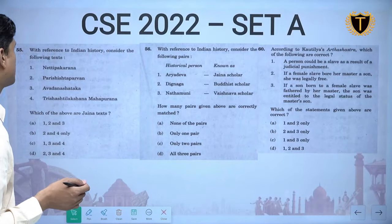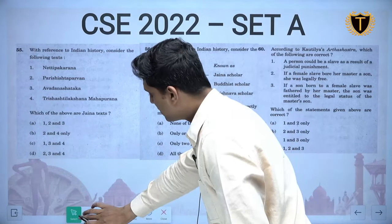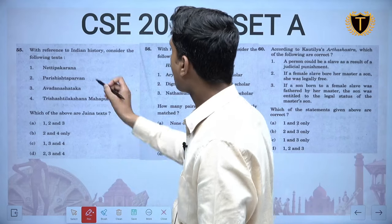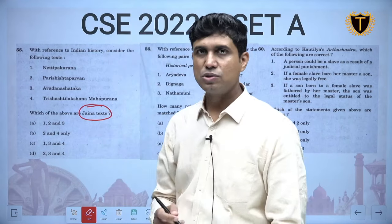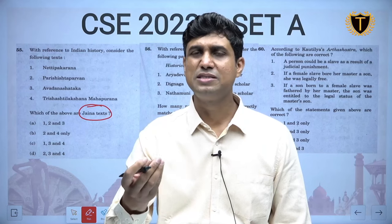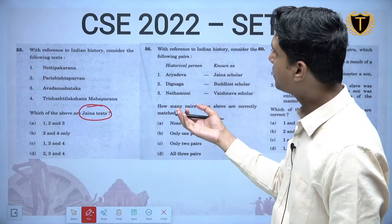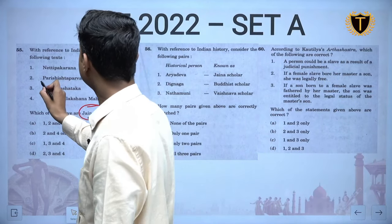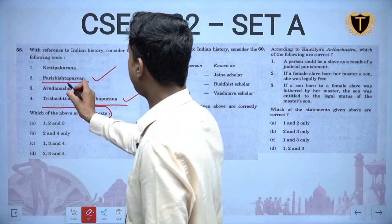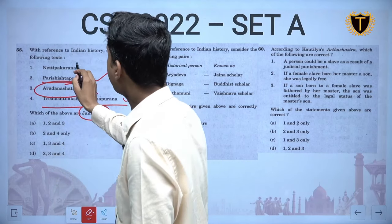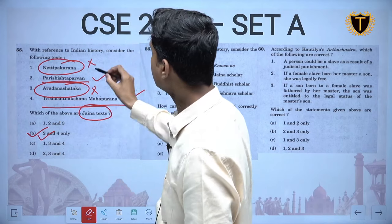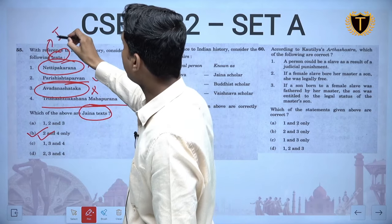Moving to 2022 questions. UPSC follows the same trend but increases difficulty. A question on Jain texts: Prashrit Parvan and Mahapurana are related to Jainism — correct. Avadana Shataka and Neti Prakarana are related to Buddhism — so they cannot be Jain texts. Answer is 2 and 4. You should try to cover texts related to Jainism and Buddhism because UPSC is now asking about them, though they are not given in routine books.